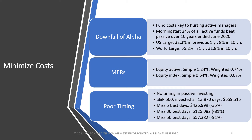On the world stage, also with large cap equity, 55.2% exceeded their benchmark in one year, but that fell to 31.8% over 10 years. I cite that data because it's important to remember that it's on a consistent and longer-term basis that it's very difficult for active managers to demonstrate they can achieve alpha and outperform their benchmarks. A large part of that is the management expense ratios.